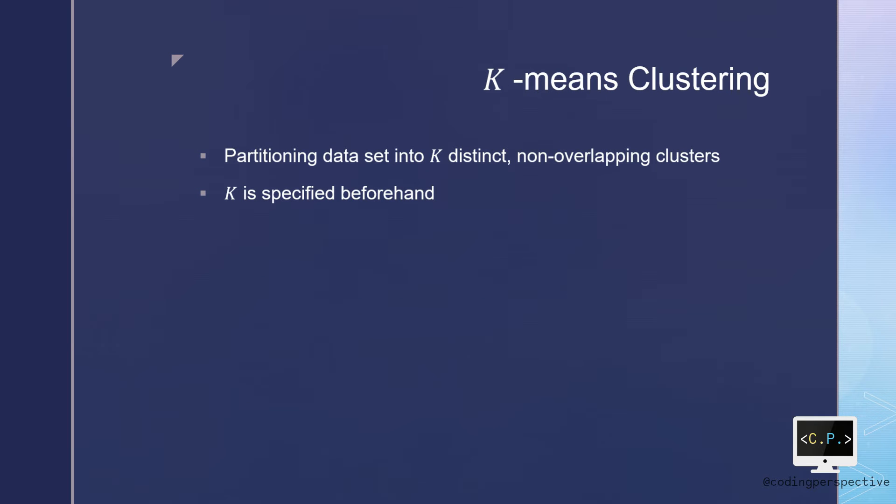K-means clustering is a simple and elegant approach for partitioning a dataset into K distinct, non-overlapping clusters. To perform k-means clustering, we must first specify the desired number of clusters K, then the k-means algorithm will assign each observation to exactly one of the K clusters.